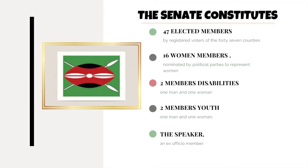For instance, a senator vying for a seat in the Senate will first need to fulfill all the requirements needed to become a senator. If their candidacy is accepted by the IEBC officials, they can then campaign in their respective county, and the registered voters will then decide.